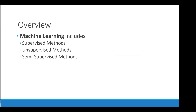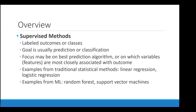This includes supervised methods, unsupervised methods, and semi-supervised methods. For most of today I'm going to focus on supervised methods. Supervised methods are when we have labeled outcomes or classes and the goal is usually prediction or classification. From a traditional statistical model, you could think of linear regression or logistic regression as supervised methods; from the machine learning universe, something like a random forest or a support vector machine.